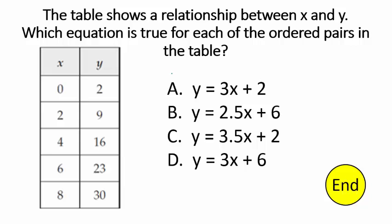The table shows a relationship between X and Y. Which equation is true for each of the ordered pairs in the table? We've got four equations and one of these will work for every set of digits. Starting with the pair (0, 2) — plug 0 into option A: 3 times 0 plus 2 equals 2, which is true. But when I plug in 2, I get 6 plus 2 equals Y, which would be 8 — that's not true. So A does not work and we throw it out.